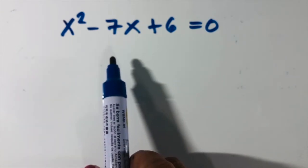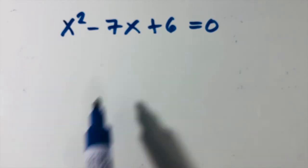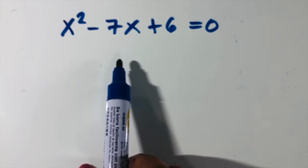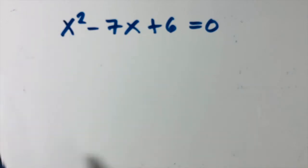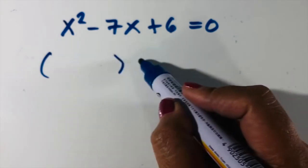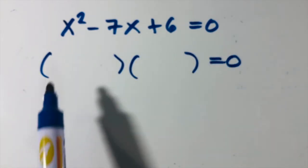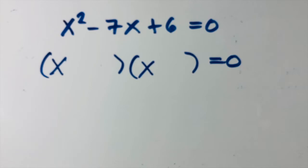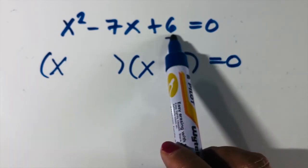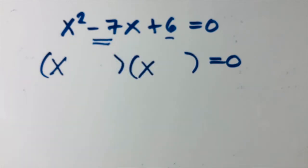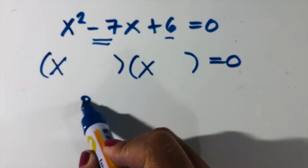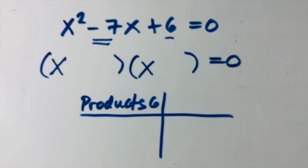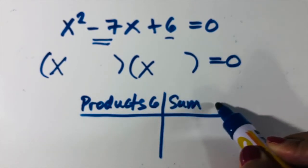Solve x squared minus 7x plus 6 equals zero. Is this equation written in standard form? Yes. Is there any common factor in each term? No. So we use factoring where a equals one. Let us factor x squared as x times x, then find the factors of 6 that give us a sum of negative 7.